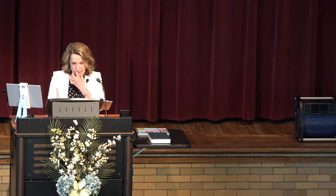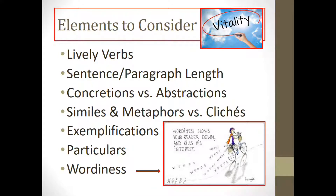Here are some elements to consider: lively verbs, sentence and paragraph length, concretions versus abstractions, similes, metaphors, clichés, exemplifications, particulars, and wordiness. Use active verbs unless there's no comfortable way around a passive verb. The difference between an active verb and a passive verb is the difference between life and death in your writing. Verbs are the most important tools in your communication toolbox — they push your sentences forward and give them momentum. If you want to revisit how active verbs give vitality to the written word, pick up the King James Bible and notice all the active verbs. That is why it is the most beautifully written book ever published.